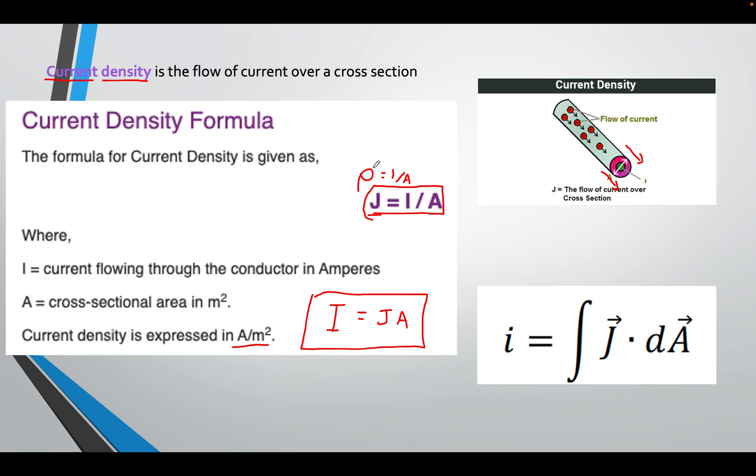So, current over area. This density that we know, we've already used ρ for resistivity, so I cannot use it again. We will use J instead. So, density will become J.